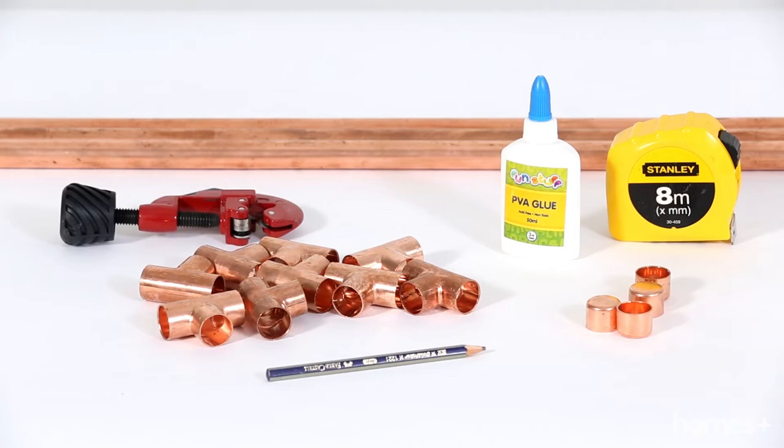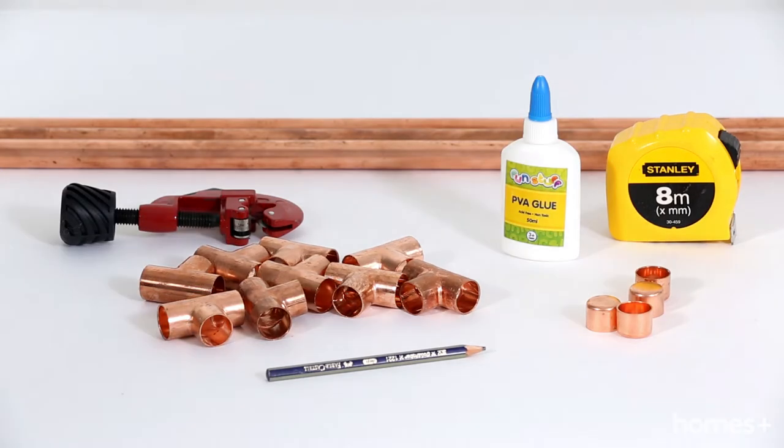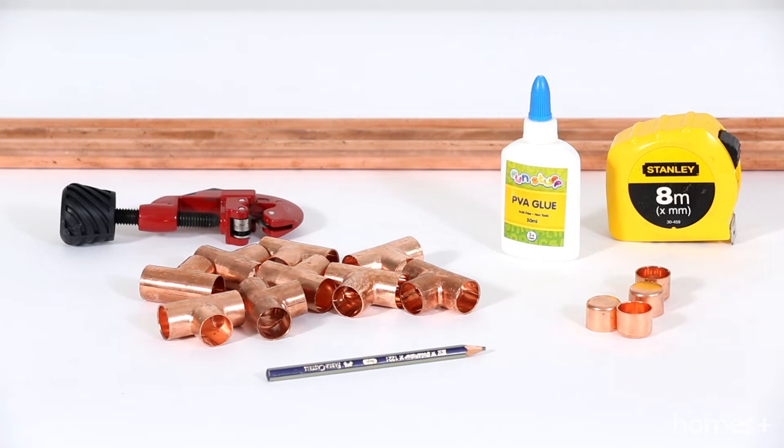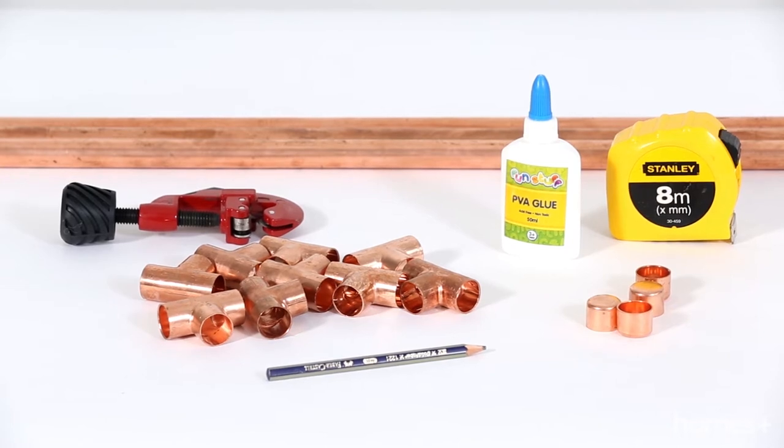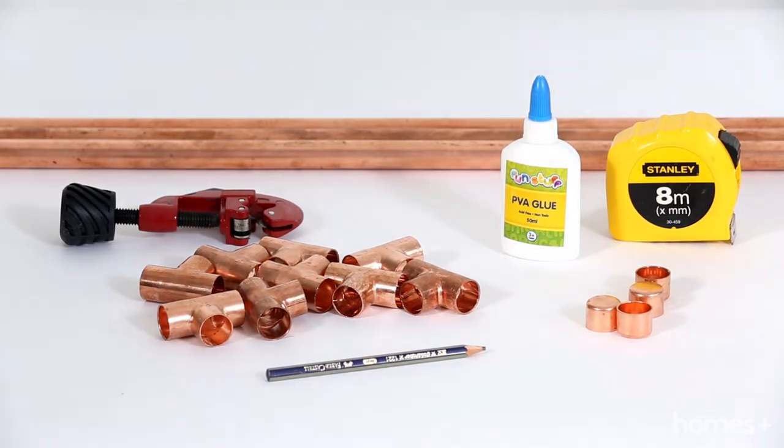To make your copper towel rack you will need three 1.5 meter lengths of copper pipe, four copper end caps, copper capillary tees, tape measure, and pencil.